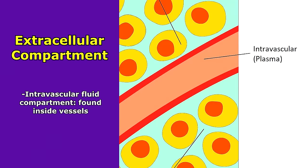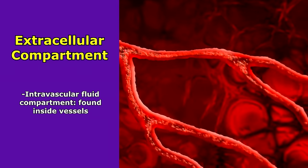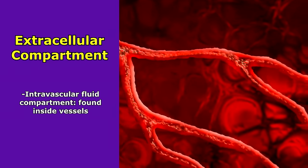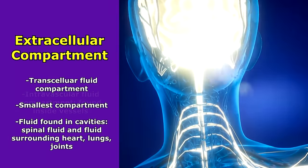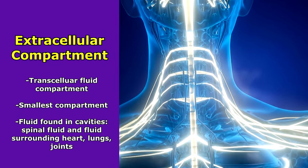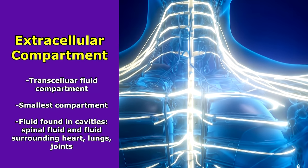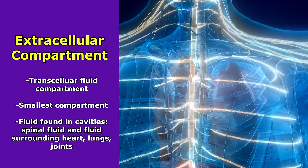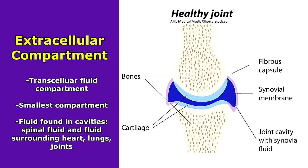The interstitial fluid plays a very vital role in helping be a medium for electrolytes and other substances to move to and from the cell to the plasma with the assistance of the capillaries. The intravascular fluid compartment, also known as plasma, is the fluid found inside the blood vessels and contains important substances like electrolytes and blood cells. Lastly, the transcellular fluid compartment is the smallest and includes fluid found within certain body cavities, like spinal fluid, the fluid surrounding the heart and lungs, and fluid in the joints.